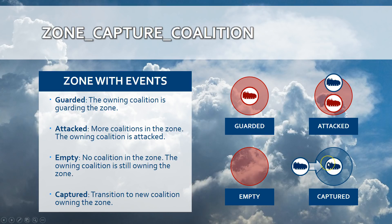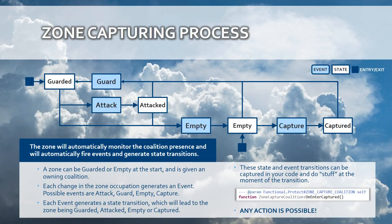This graph models the zone capturing process, which is basically a state machine. The light blue boxes represent events and the white boxes represent states. This graph shows the different states that Zone Capture Coalition can have and how it transitions through events fired by the class.